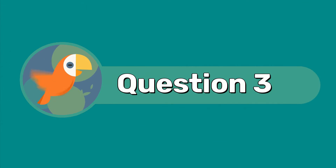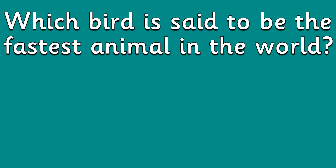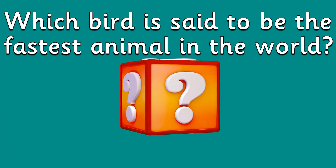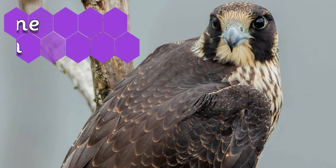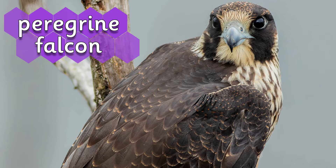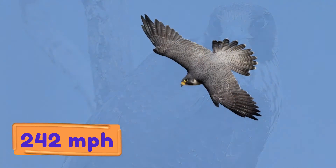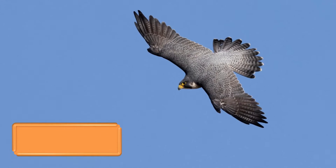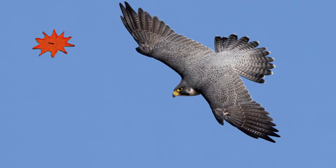Question 3: Which bird is said to be the fastest animal in the world? It's a peregrine falcon, which can reach a whopping 242 miles per hour. It wouldn't even be a race against a cheetah.